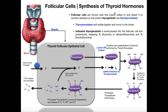On a very basic level, follicular cells import iodide and attach it to tyrosine residues on the protein thyroglobulin. This occurs via an enzyme called thyroperoxidase — sometimes written as thyroid peroxidase, but they're the same enzyme. Thyroperoxidase is generated in the follicular cell and then moved into the lumen, also called the colloid, where the iodine ligation actually occurs.